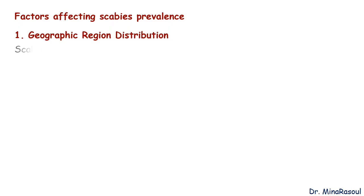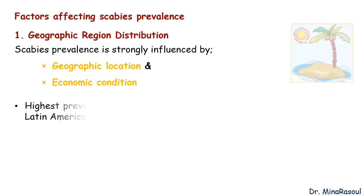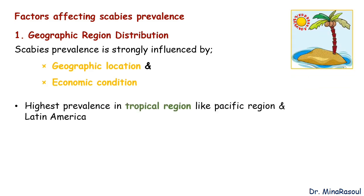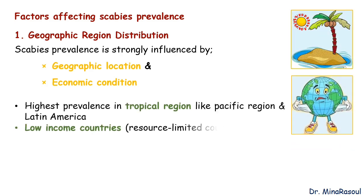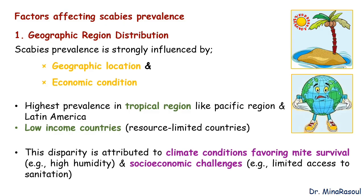There are factors that can affect the prevalence of scabies. Factor number 1 is geographic region distribution. Scabies prevalence is strongly influenced by geographic location and economic condition, with the highest rates observed in tropical regions and low-income countries. This disparity is attributed to climate conditions favoring mite survival, for example high humidity, and socioeconomic challenges, for example limited access to sanitation.